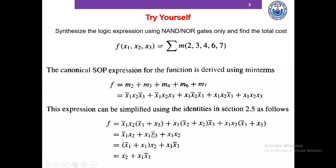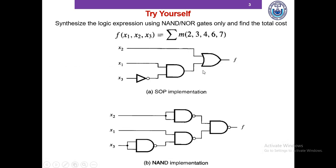We continue applying Boolean algebra until we arrive at an expression that can no longer be reduced — that is our minimum cost implementation. This is our SOP implementation, and if we convert the circuit to NAND gates, this is our NAND implementation.